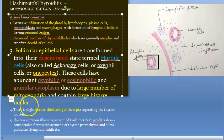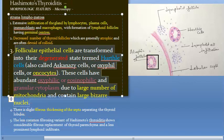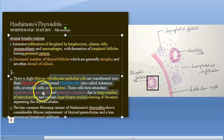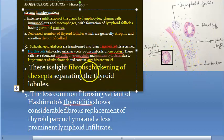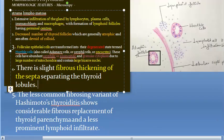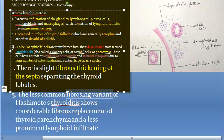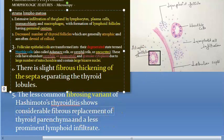Regarding the septa: there is slight fibrous thickening of the septa, which are thick and fibrous, separating the thyroid lobules. In the fibrosing variant there is considerable fibrous replacement with less prominent lymphoid infiltrate.